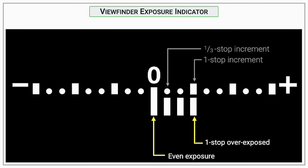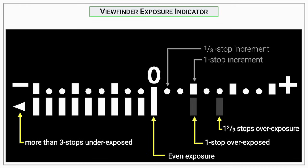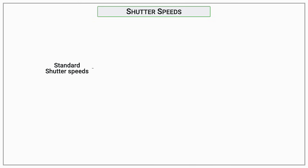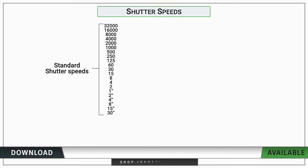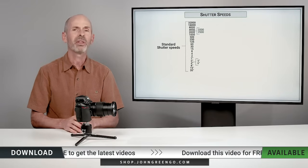The exposure indicator shows in third-stop and full-stop increments how overexposed or underexposed you are. If you go too far in either direction, an arrow appears indicating you're more than three stops off. Generally, start with an even exposure at zero, then adjust according to how bright or dark your subject is. The camera has shutter speeds from 1/32000th down to 30 seconds, with third-stop increments in between.